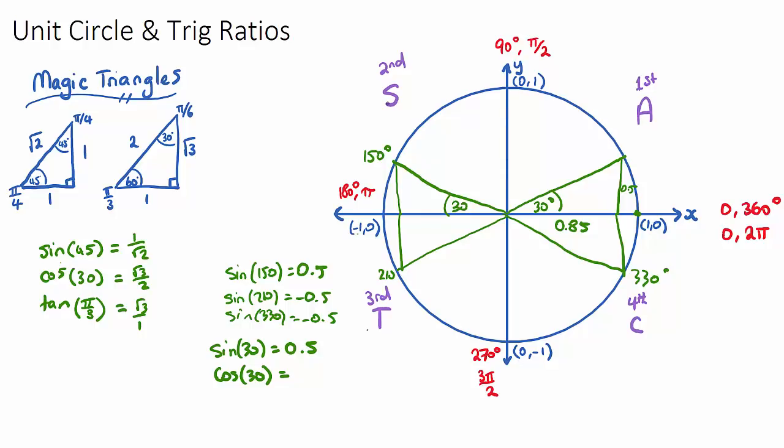In the third quadrant, only tan is positive because both sine and cos, the height and the width, will be negative. And tan is actually a negative over a negative which will turn it positive. And then in the fourth quadrant, only cos is positive because it's going down, the height is negative, so sine will be negative and tan will be negative. Only cos, the width, will be positive.